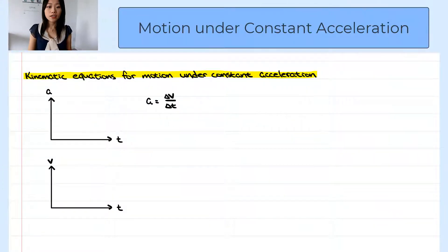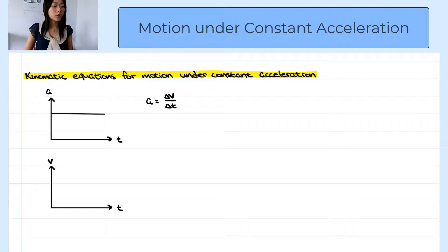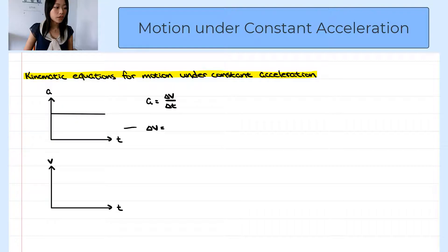For a motion under constant acceleration, on the acceleration graph you'll get a horizontal line. And by the definition of acceleration, which is the change in velocity with time — delta v over delta t — or if you have taken calculus, acceleration is the derivative of the velocity. And the change in velocity would be the area under the curve on the acceleration graph.